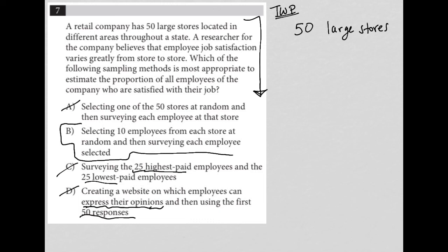Choice B is the best answer because you're getting information from each store. It is only 10 employees, but we don't know how many employees there are in total at each store — there could be only 20, 30, or 40, in which case you're getting a decent percentage. It's random, so you're not cherry-picking which type of employees you're asking questions to. Out of the four options, choice B is the best option.